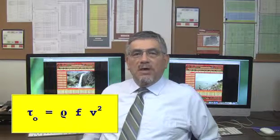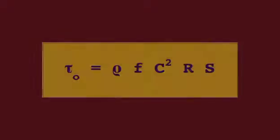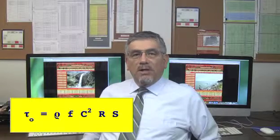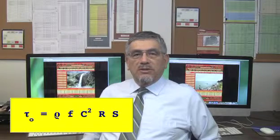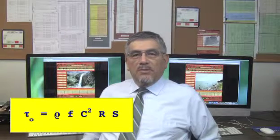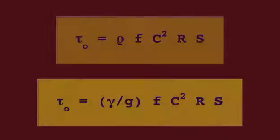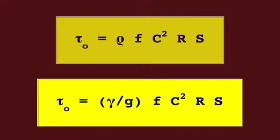V is the mean velocity. Replacing the mean velocity for its expression following Chezy, in which R is the hydraulic radius and S is the bottom slope. Replacing rho equal gamma over g, which reduces to the simplified form.